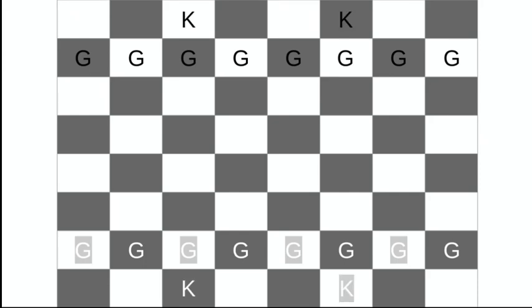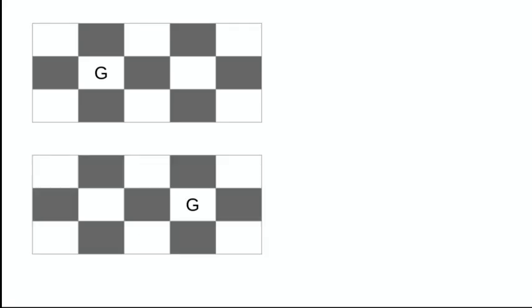Now I bet you're wondering what these guard pieces are exactly. Well, the kings move like they do in normal chess, one space in any direction. But the guards, they can move either one space diagonally, or they can hop over one adjacent space.